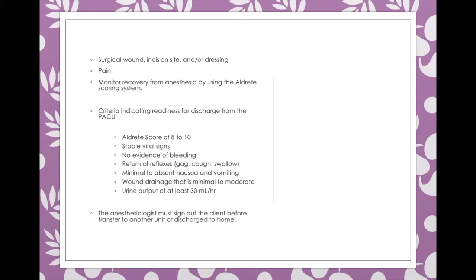Additional Aldrete discharge criteria: gag, cough, and swallowing reflexes must have returned — do not send a patient home without these, as aspiration at home could be deadly. Nausea and vomiting must not be excessive; minimal nausea is normal from anesthesia. Urine output must be at least 30 mL/hour before removing the Foley or discharging. Passing gas must also occur before discharge to rule out paralytic ileus.